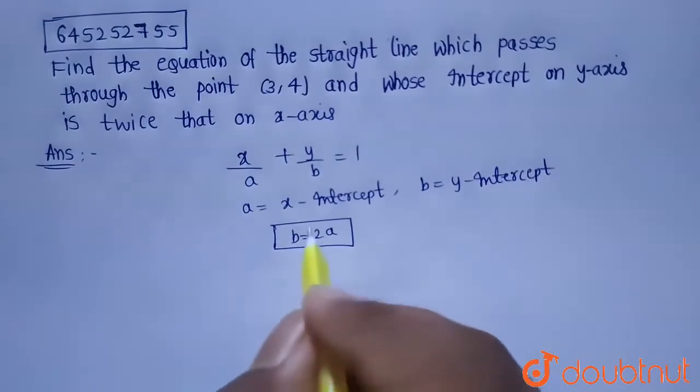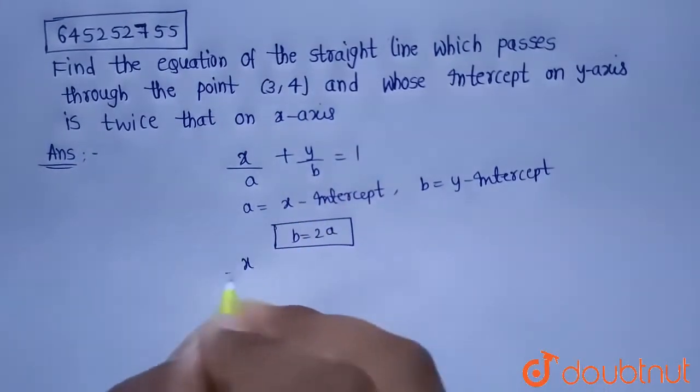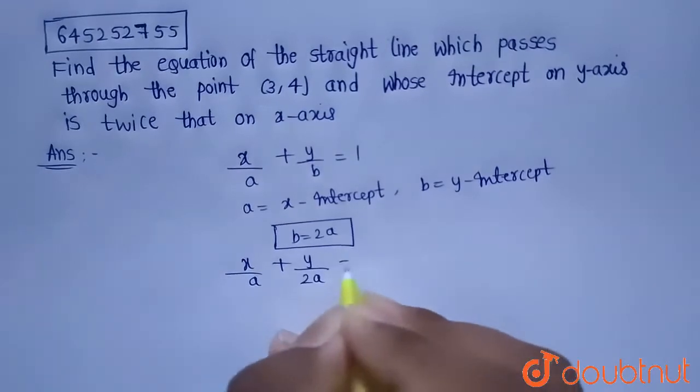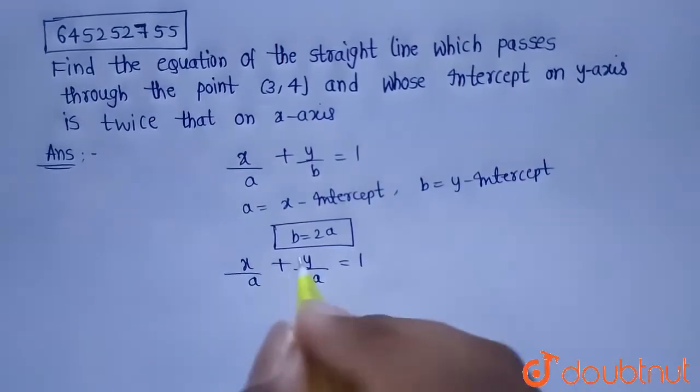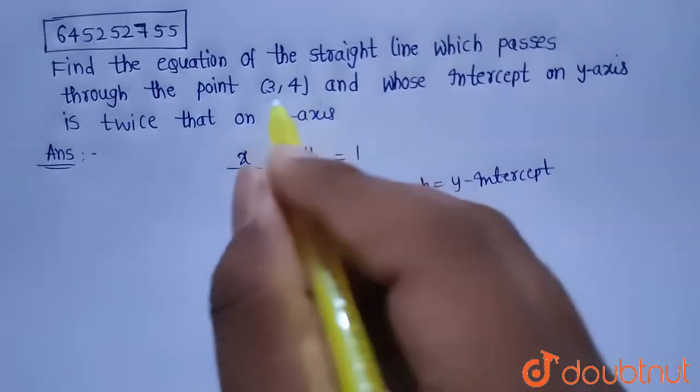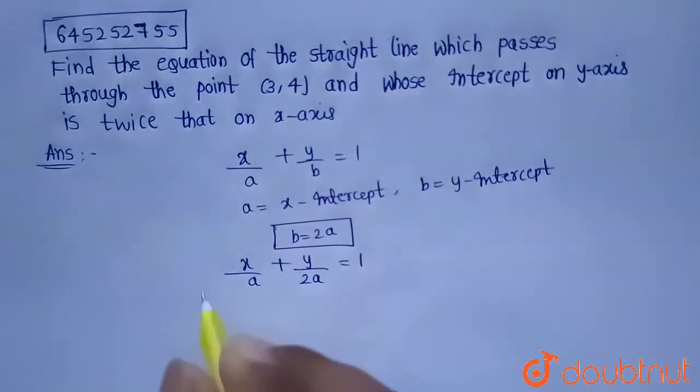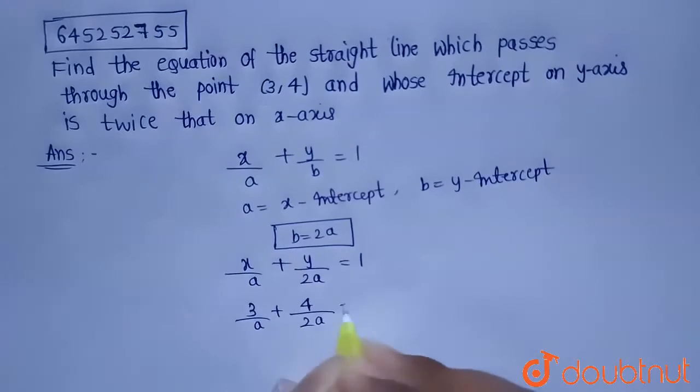Now, let me put this b value in this equation. So, x/a + y/2a = 1. Now, given this line is passing through the point (3,4), so let's put this point in the given equation. So, 3/a + 4/2a = 1.